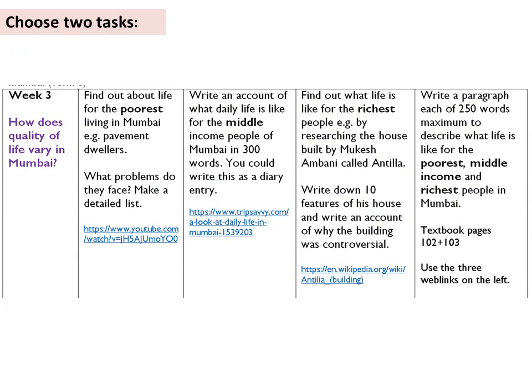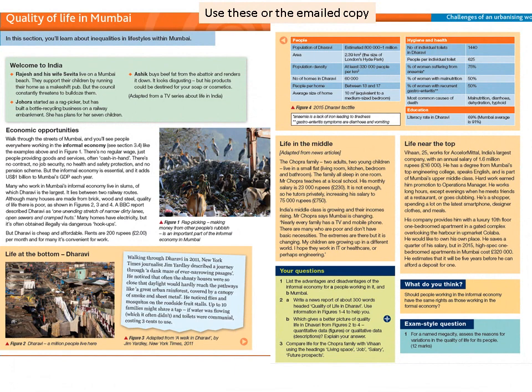Now it's time to choose two tasks for the week. Going from left to right, they become more challenging. If you are going for one of the top grades, please aim for the final column on the right. The tasks look at the poorest people on the left, middle income in the centre, and the wealthiest people on the right. Here to finish are the textbook pages that you could use, with a box for each of the different income groups. Please, as you have done in the last two weeks, send some evidence of your work to your class teacher. Thank you.